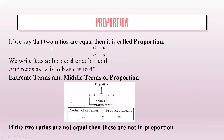Proportion. If we say that two ratios are equal, then it is called proportion. A upon B is equal to C upon D. We can write it as A is to B, proportion C is to D, or A is to B equal to C is to D. It can be read as A is to B as C is to D. Extreme terms and middle terms of proportion: if two ratios are not equal, then these are not in proportion.